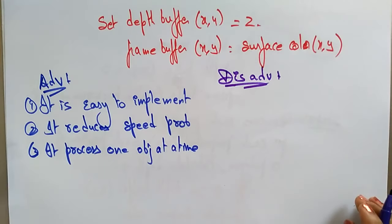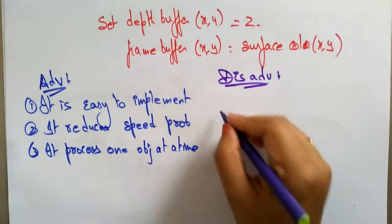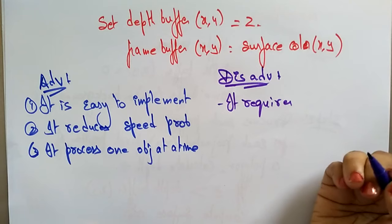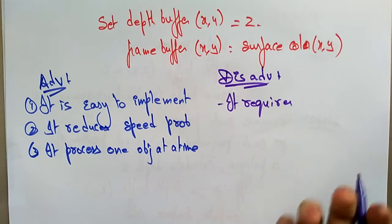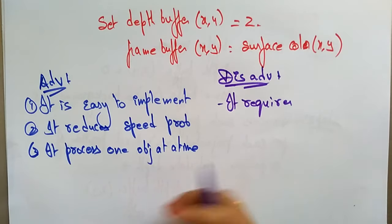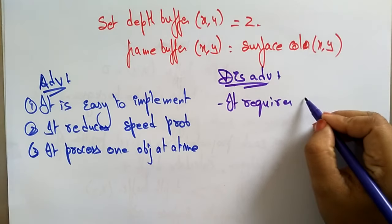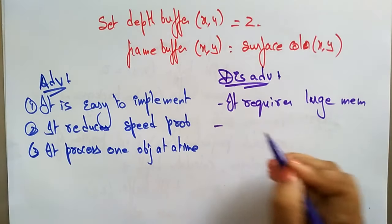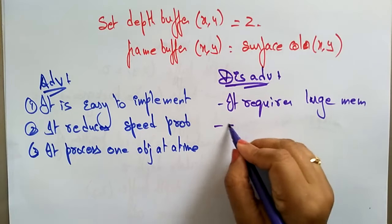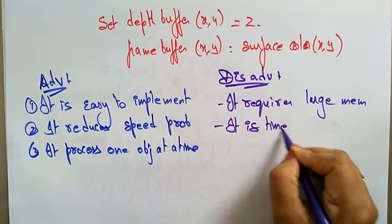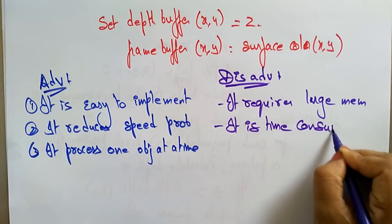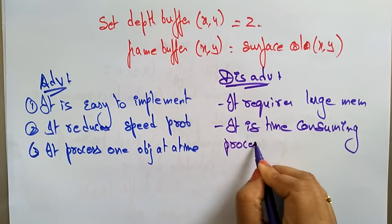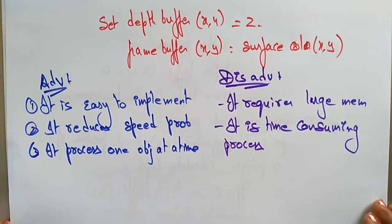The disadvantages of the Z-buffer method are: it requires large memory because each surface has to be verified, and it is a time-consuming process. Thank you.